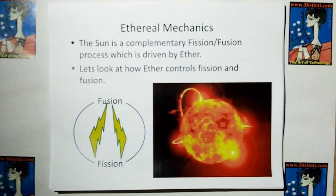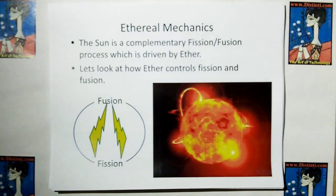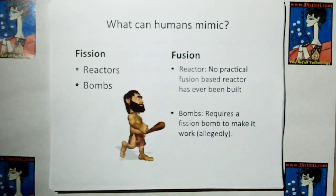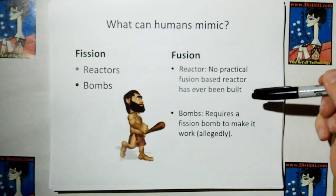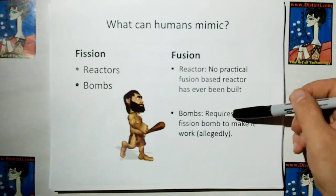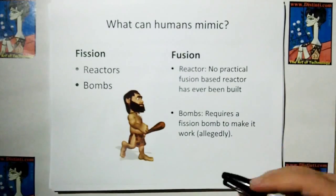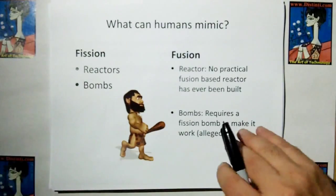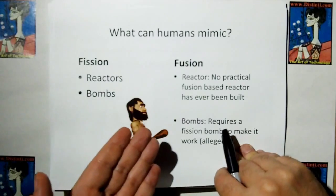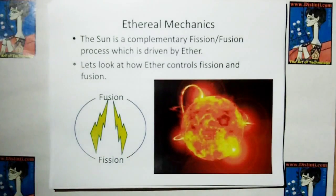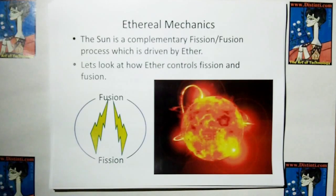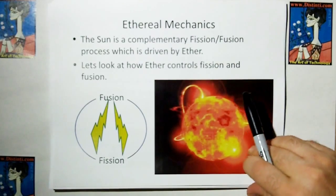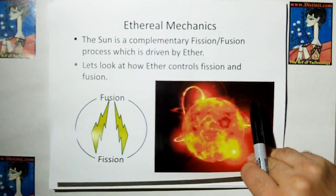What ethereal mechanics says is the Sun is a complementary fission-fusion process. The other thing, going back to this I forgot to mention, is that when you do fuse something together, you need extra particles, you need extra neutrons to get that fusion to happen. And I guess when you have a fission bomb, the fission gives you those extra particles you need to get the fusion going. So it would be logical that if fusion did work, it would require a fission-fusion complementary process. And that's what ethereal mechanics says that stars are. So let's look at how ether controls fission and fusion.